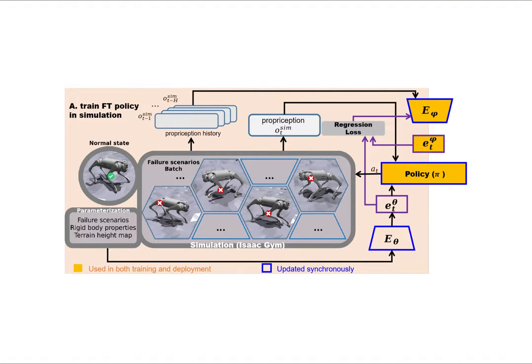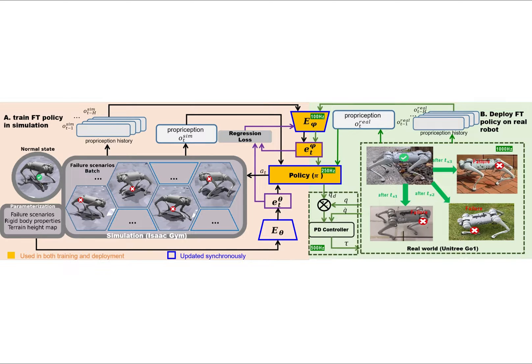We first train a neural network-based controller using deep reinforcement learning. Various failure scenarios and the physical world are parameterized and encoded into a latent space. An online adapter is concurrently trained to identify the failure. The adapter and the policy together form the controller, which then can be directly deployed on the real robot. This adaptive policy automatically and rapidly identifies and handles failure in reality.